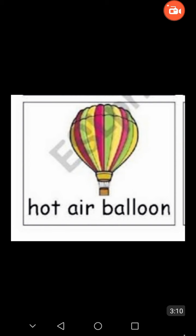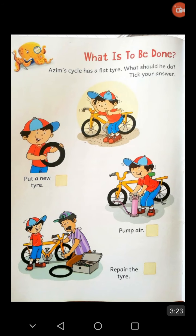Sort the land transport, water transport and air transport differently. Now open page number 68 of your Icon Explorer Book Number 4. What is to be done? Azen's cycle has a flat tire. You see the first picture — a boy whose name is Azen.